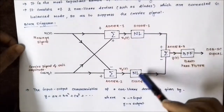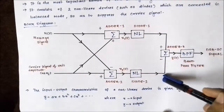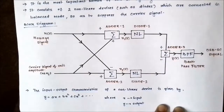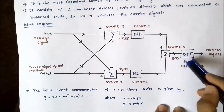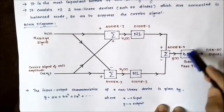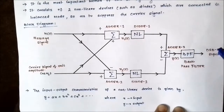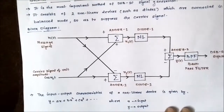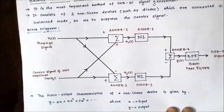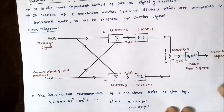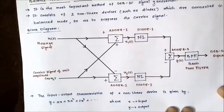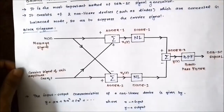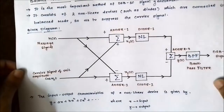The outputs of the two nonlinear diodes are fed to a final adder with a plus-minus sign convention, and the output of the final adder is fed to a band pass filter. The output of the band pass filter gives us the required double sideband suppressed carrier signal. Please pause this video and draw this block diagram so that you can understand the remaining steps in a better way.